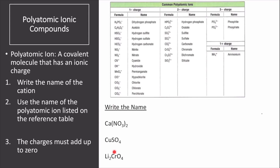Let's write the name of different compounds following these directions. The first thing to do is to write the name of the cation. For the first compound, it would be calcium. Calcium only has one oxidation state, plus 2, so there is no need to write a roman numeral next to it. Then we use the name of the polyatomic ion listed on the table — NO₃ is nitrate — so this would be calcium nitrate.